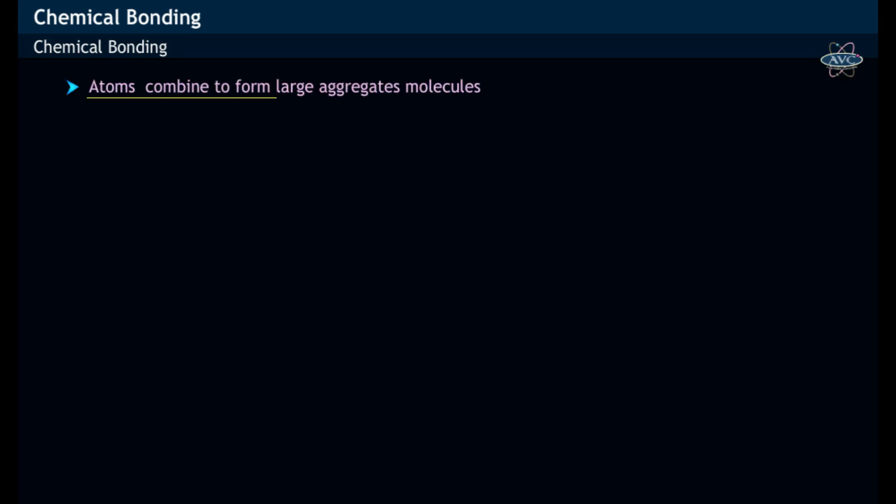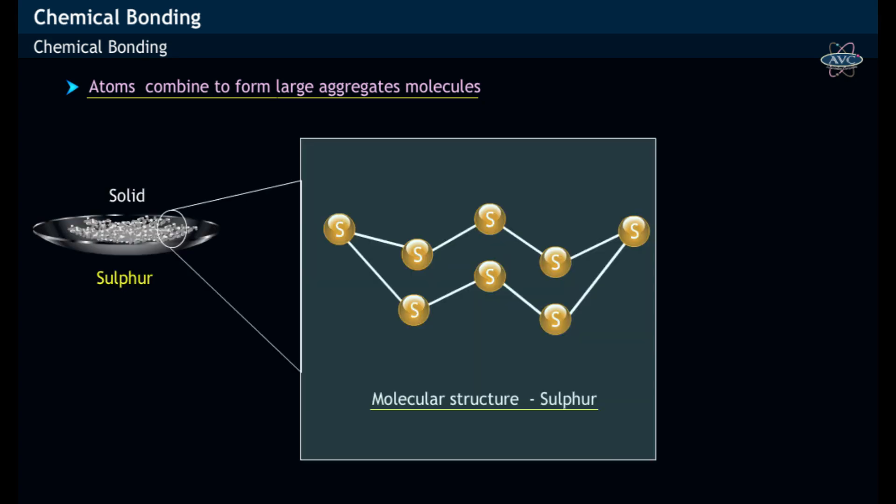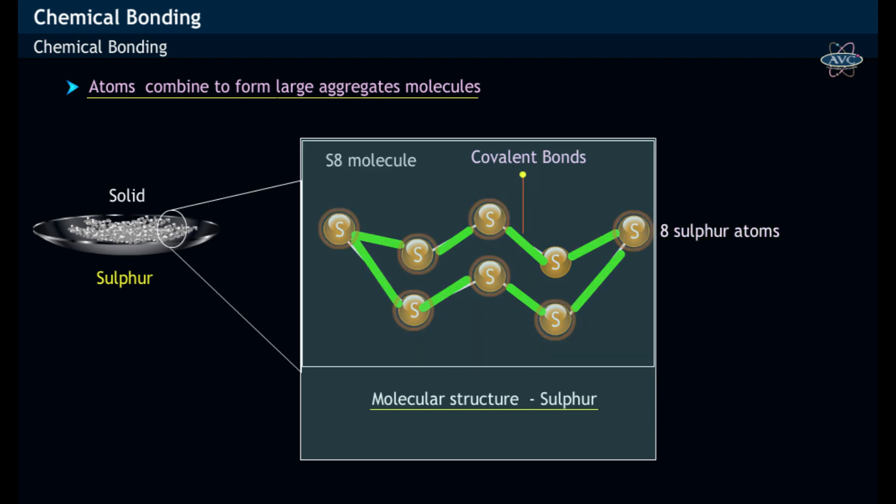Atoms combine to form large aggregates in case of solid sulfur, wherein eight sulfur atoms are bonded to each other and thereby forming S8 molecule which has a crown shape.